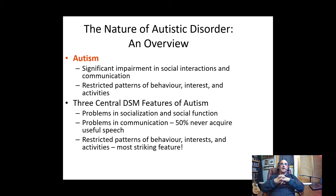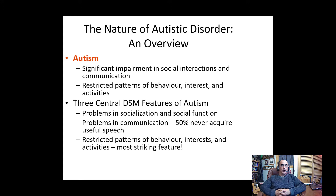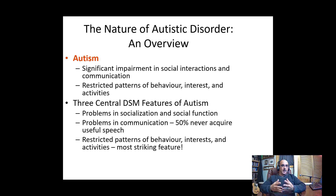People with autism have significant impairment in social interactions and communication. For those with high-functioning or mild autism, they may have difficulty relating to others, communicating how they're feeling, or interpreting the feelings of others. For those with more complex or profound autism, they might have no verbal communication at all and have a very challenging time connecting and relating with others.